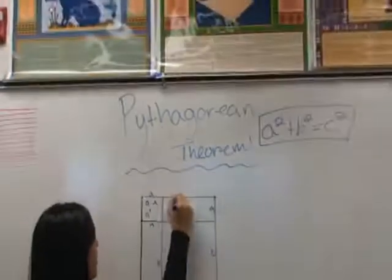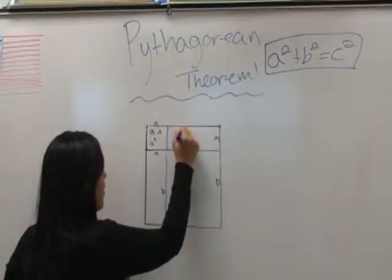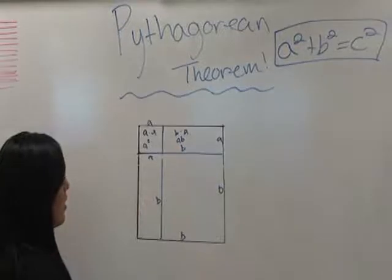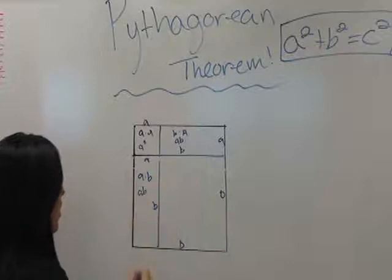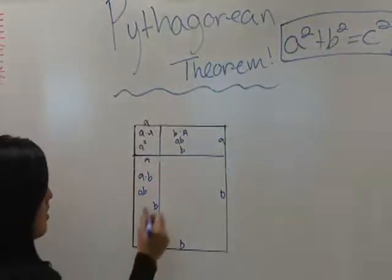B times A equals AB. A times B equals AB. And B times B equals B squared.